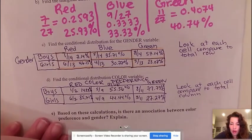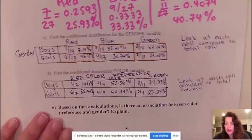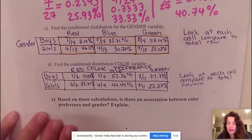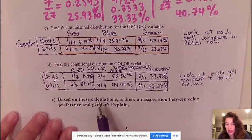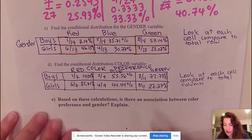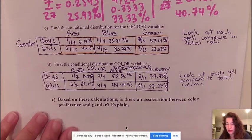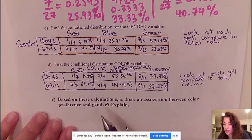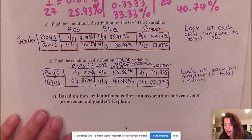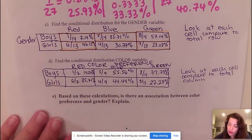Now, why are we calculating conditional distribution? Because many times we are asked based on these calculations if there is an association between any two variables. In this case, we were asked to find the association between color preference and gender. So you always want to answer a question first by saying if there is an association or if there's not an association.